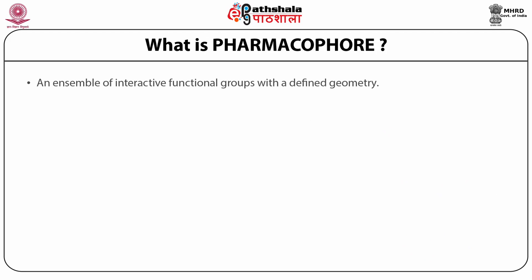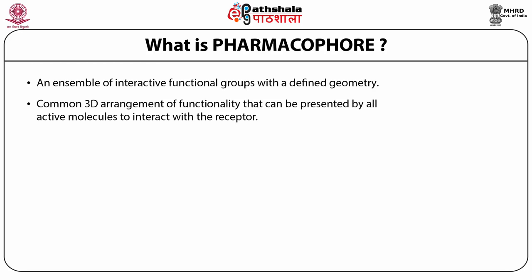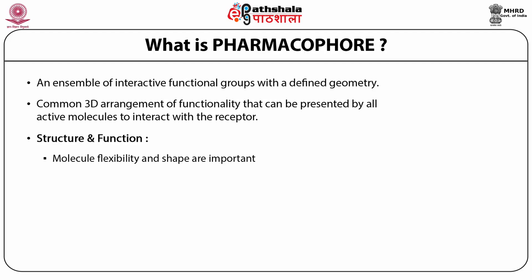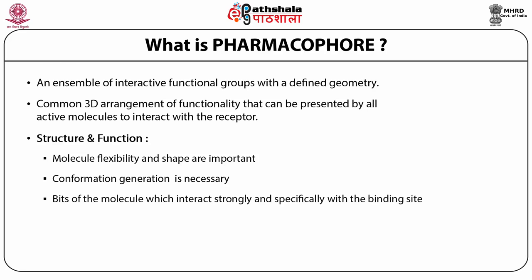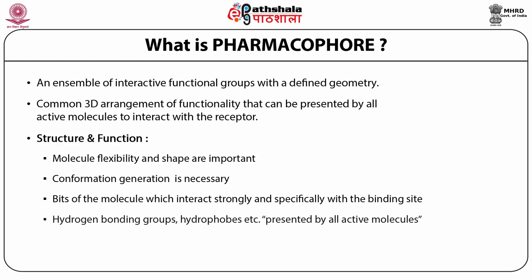What is pharmacophore? It is an ensemble of interactive functional groups with a defined geometry. It defines the specificity of the active site by a 3D arrangement of functionality that can be presented by all active molecules as they interact with the receptors. Key structural considerations include flexibility of chemicals, shapes, conformer generation, and identification of molecular bits that interact strongly with the binding site — such as hydrogen bonding, hydrophobic interactions, etc. — for all active molecules.